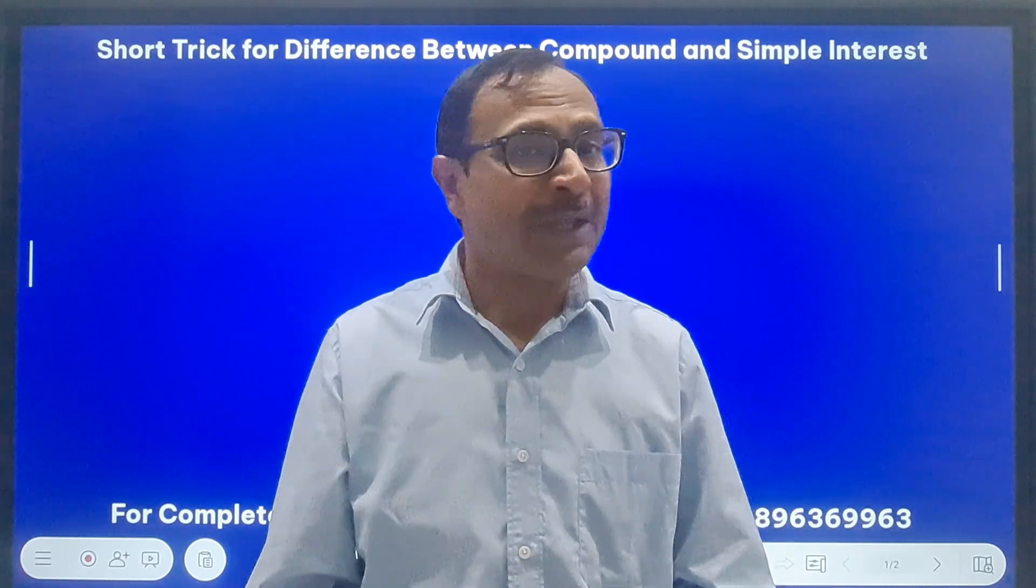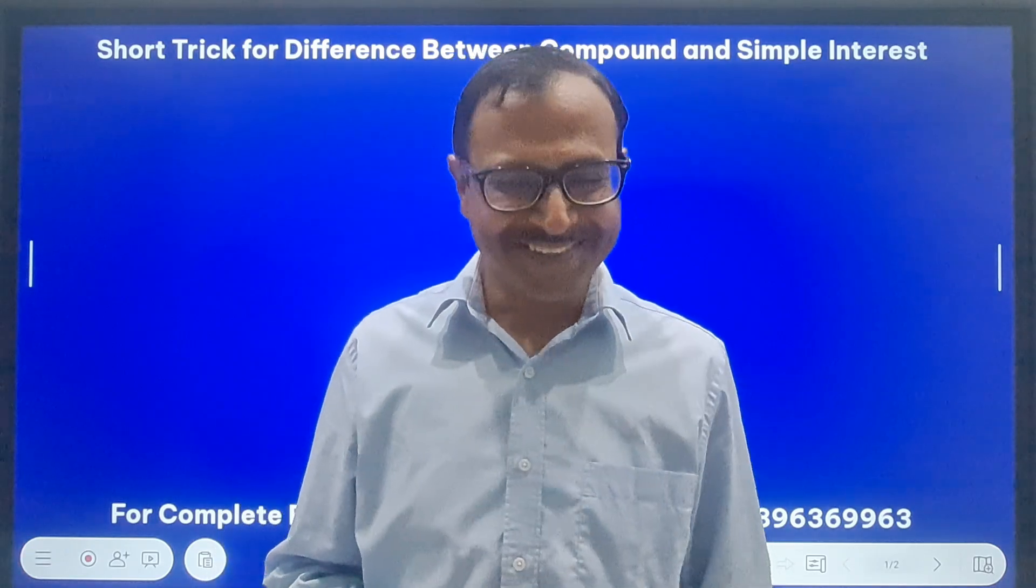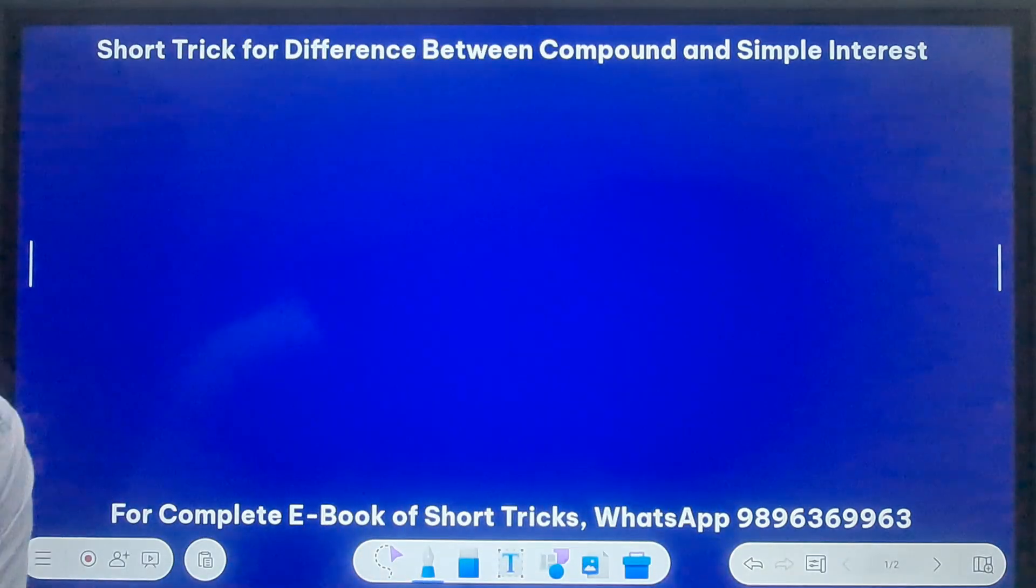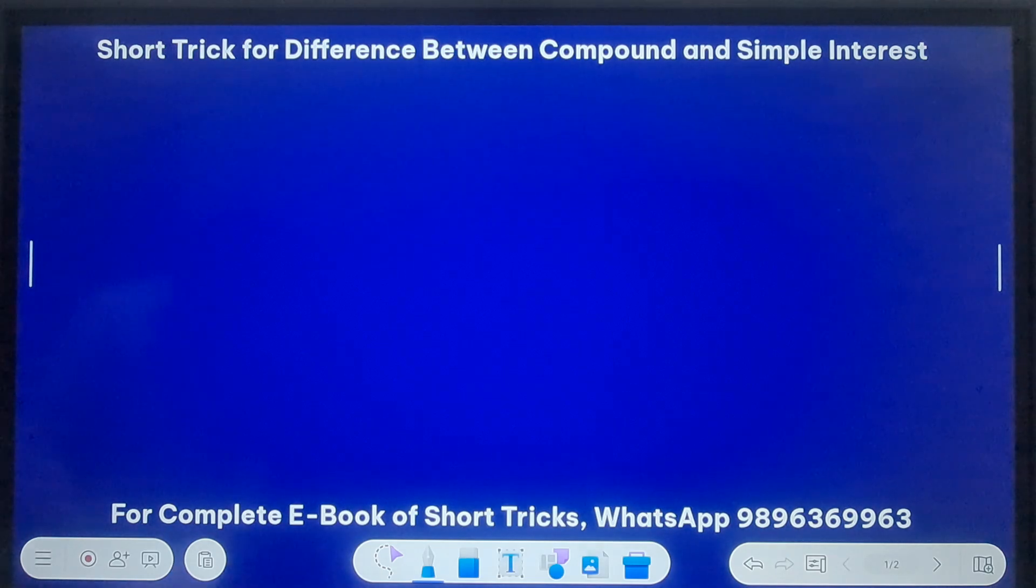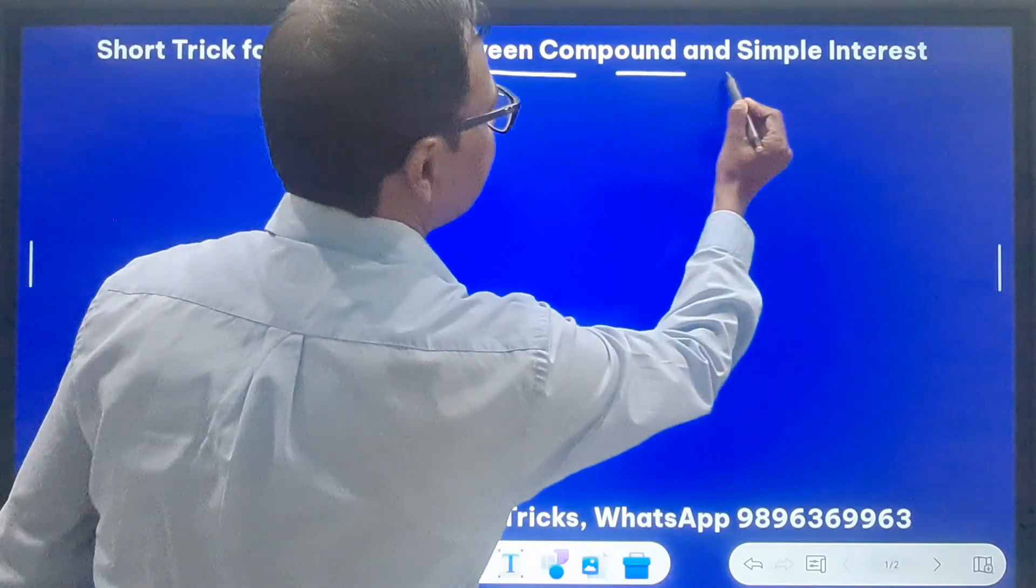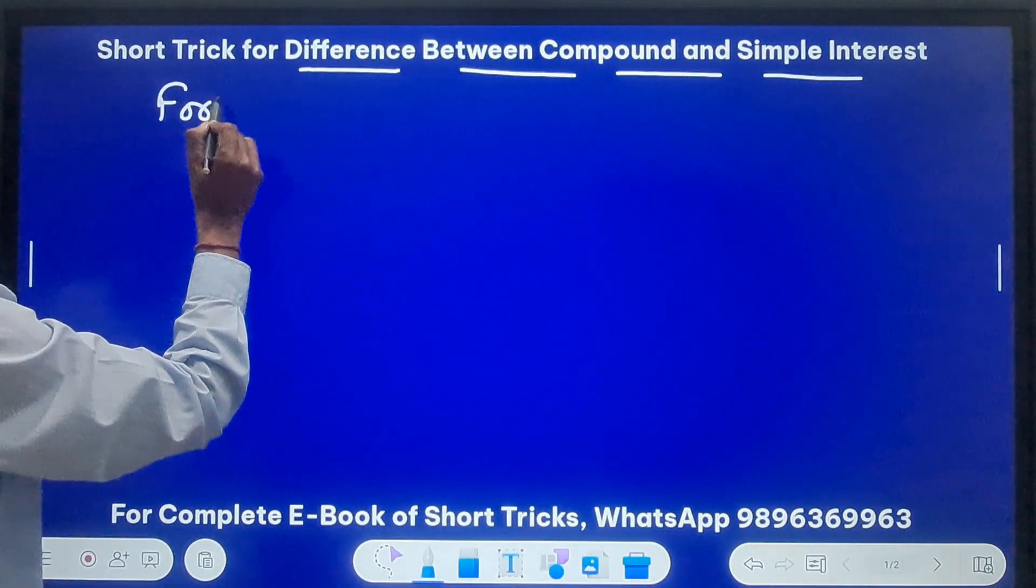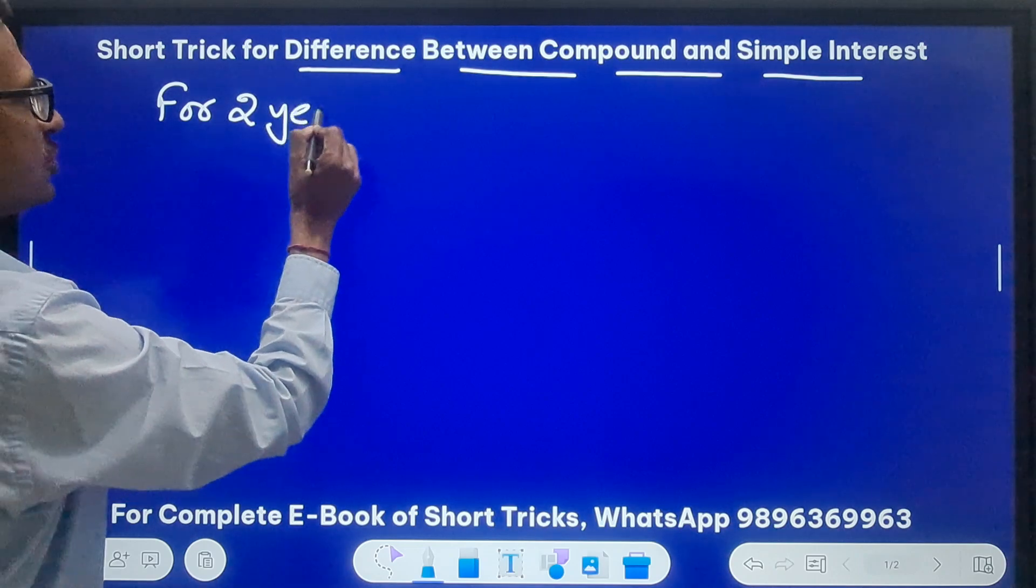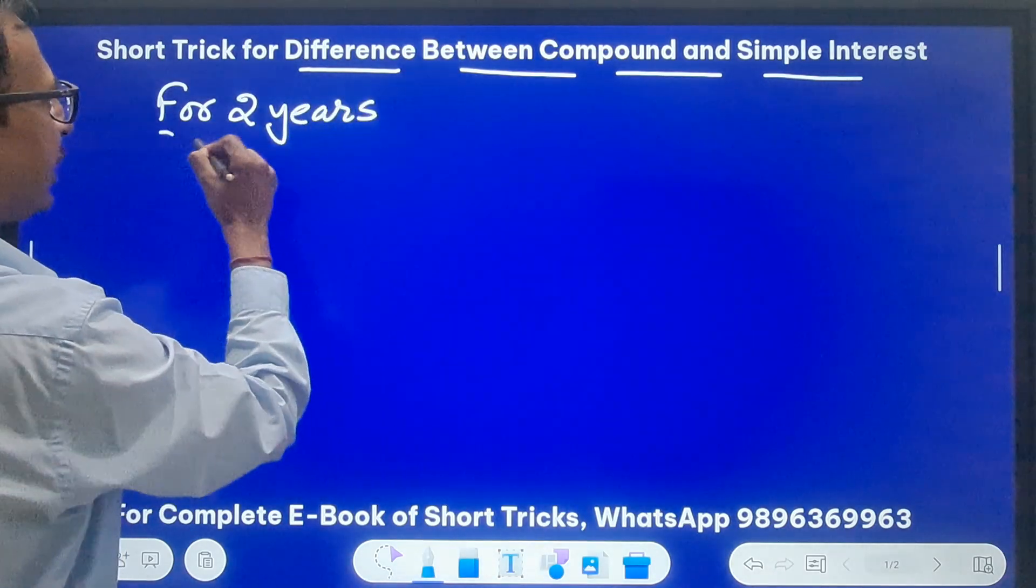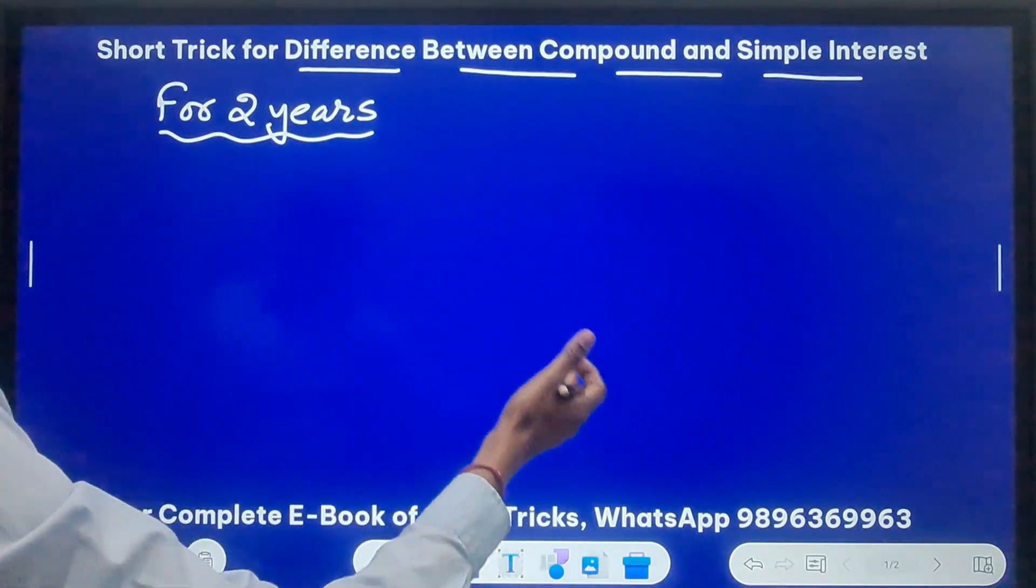So here I go. The first case I am going to take up is for two years. So let's learn the concept first and then we will get on with the questions also. So I am talking about difference between CI and SI. Now this slide is for two years. The formula or the direct short trick will differ if the time is two years or when the time is three years.